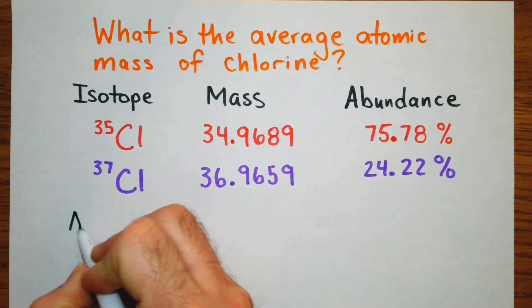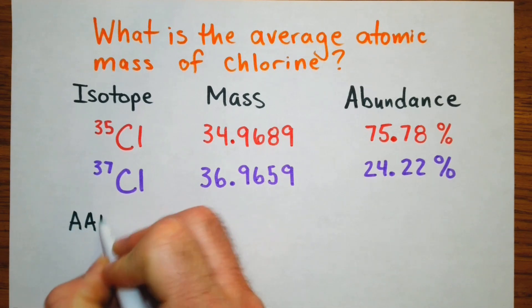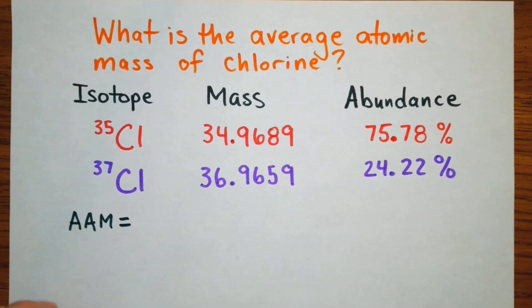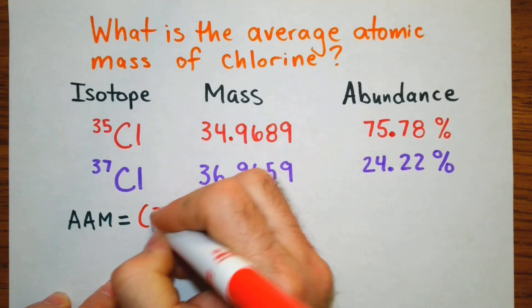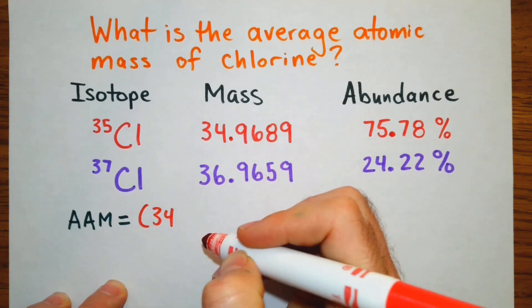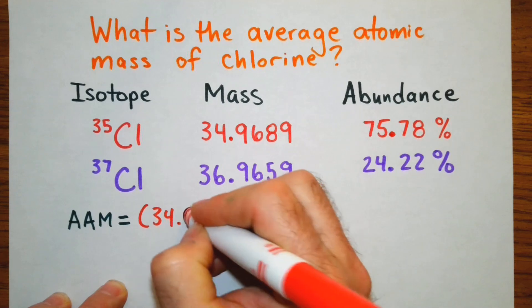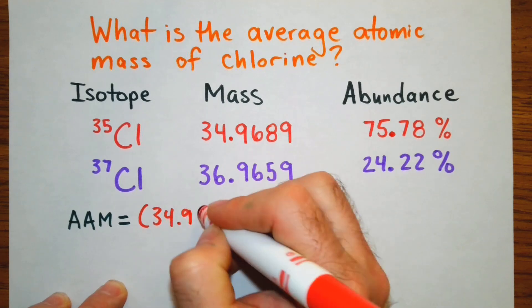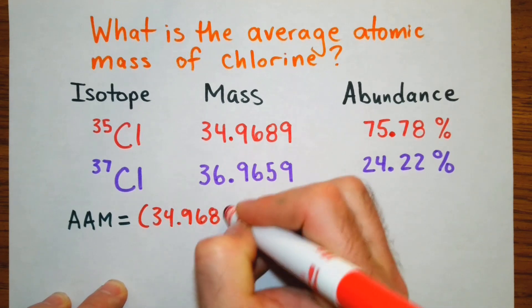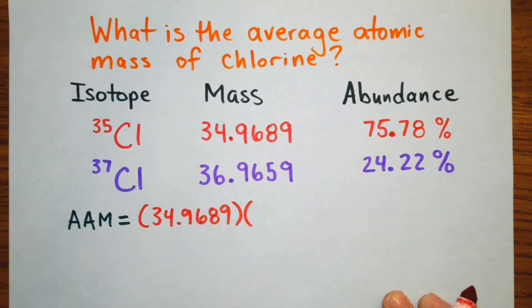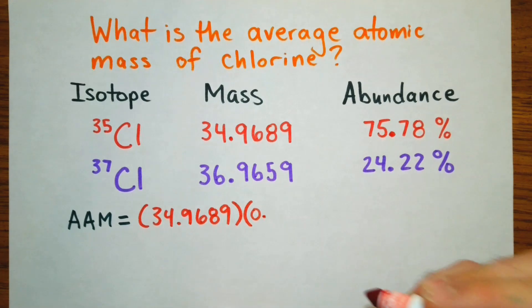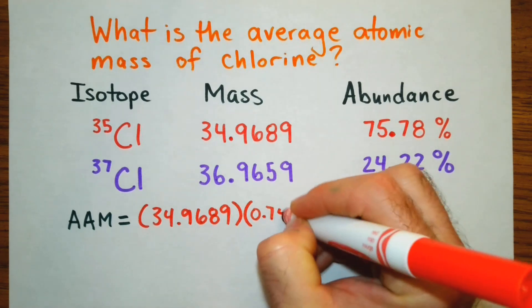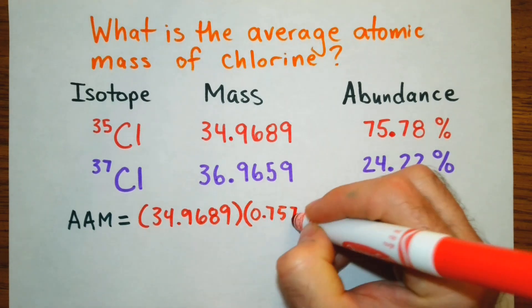So for the average atomic mass to calculate that we are going to multiply the mass of this chlorine-35 which is 34.9689 and then we're going to multiply that times its abundance. Decimal form just move it over two places left, 0.7578.